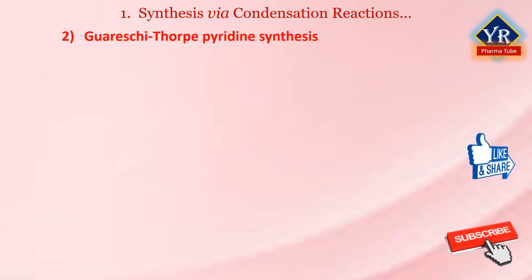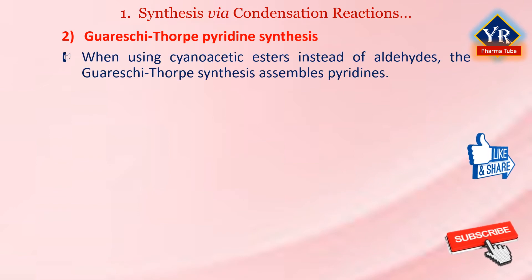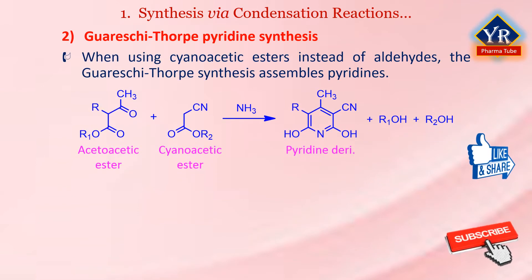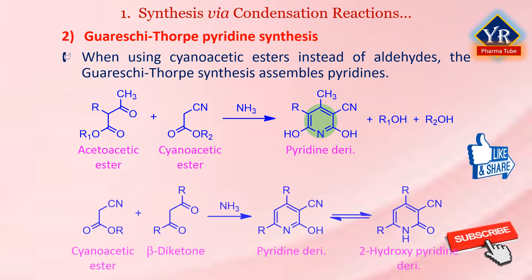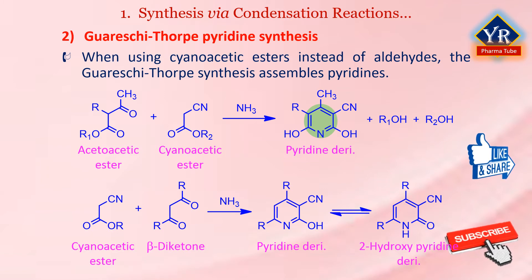Number 2, Gwaraschi-Tharp pyridine synthesis. When using cyanoacetic esters instead of aldehydes, the Gwaraschi-Tharp pyridine synthesis assembles pyridines by the condensation of acetoacetic esters with cyanoacetic esters in the presence of ammonia. A variation of this method involves the reaction of cyanoacetic ester with beta-diketone in the presence of ammonia to generate 2-hydroxypyridine or 3-cyano-2-pyridones. Providing the two carbonyl groups are sufficiently different in reactivity, only one of the two possible isomeric pyridine products is formed via reaction of the more electrophilic carbonyl group with the central carbon of the 3-amino-enone, 3-amino-acrylate, or cyanoacetamide.